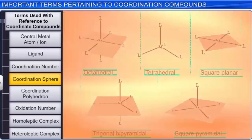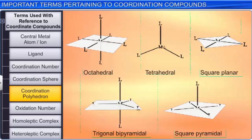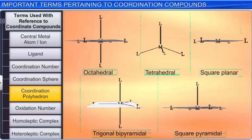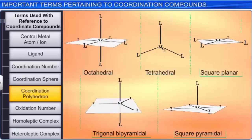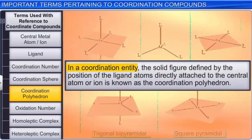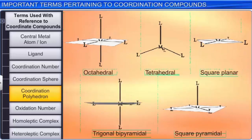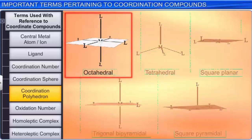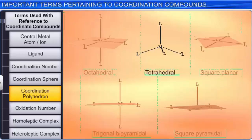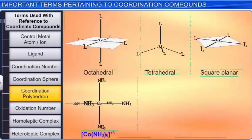Coordination polyhedron is another term used in coordination chemistry. In a coordination sphere or entity, the ligands are attached to the central metal ion in such a way that it gives a definite geometry to the complex. Thus, the solid figure defined by the position of the ligand atoms directly attached to the central atom or ion is known as the coordination polyhedron. The most common coordination polyhedra are octahedral, square planar, and tetrahedral. For example, [Co(NH3)6]3+ is octahedral, [NiCl4]2- is tetrahedral, and [Pt(Cl4)]2- is square planar.